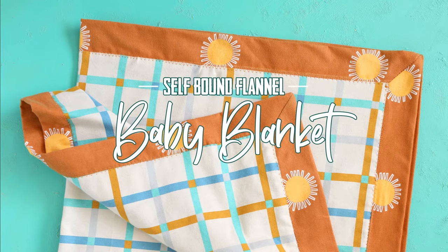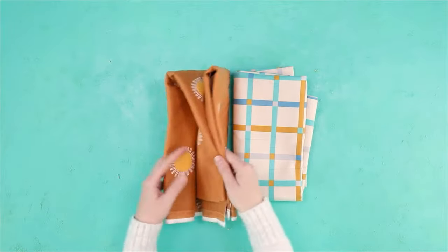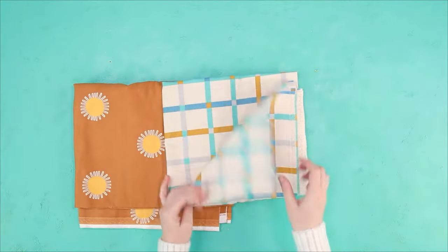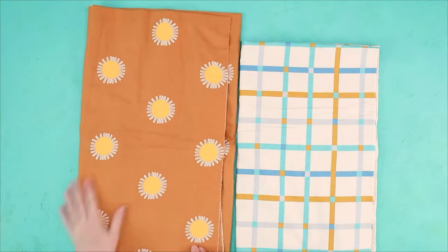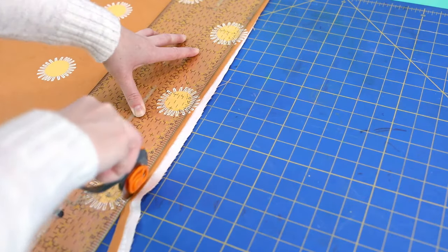To start you'll need two coordinating pieces of flannel. One piece is one and a third yards and the other piece is just one yard. The large piece will be the backing and border and the smaller piece will be the center of the blanket. I got both of these fabrics at Joann.